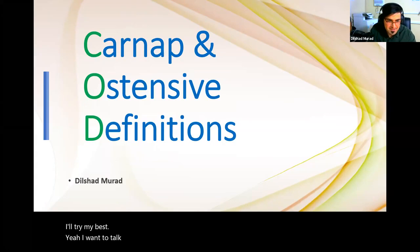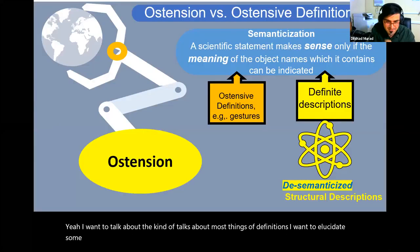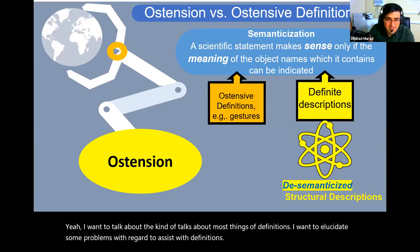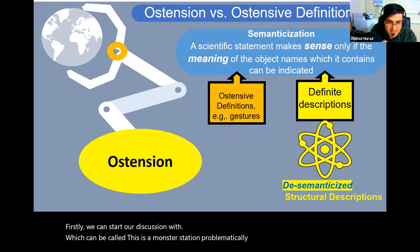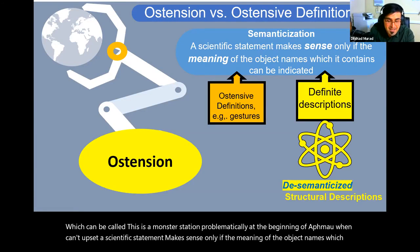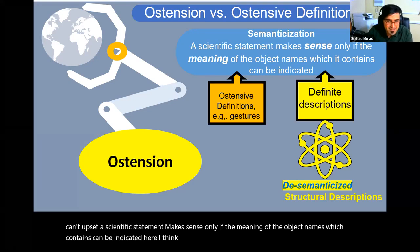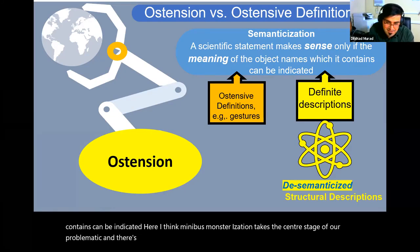I want to talk about Carnap's discussion of ostensive definitions. I want to elucidate some problems with regard to ostensive definitions. We can start our discussion with what can be called the semanticization problematic at the beginning of Aufbau. When Carnap says a scientific statement makes sense only if the meaning of the object names which it contains can be indicated, the meaning of semanticization takes center stage of our problematic. There are basically two ways of doing this, Carnap tells us.